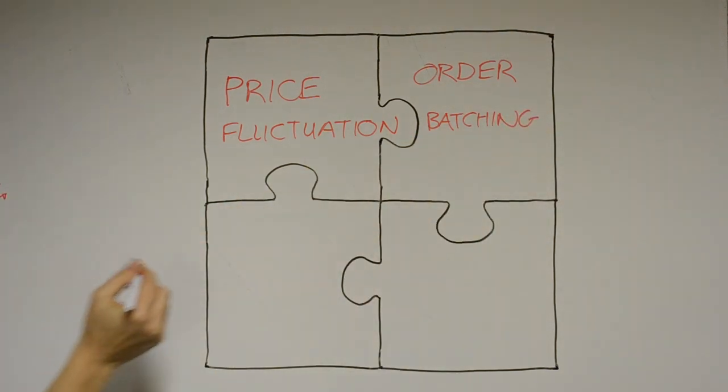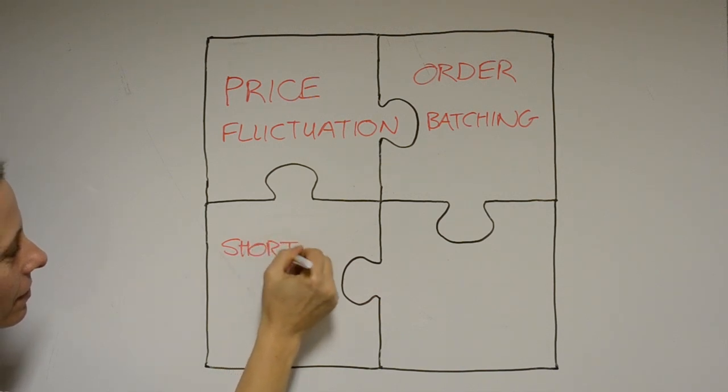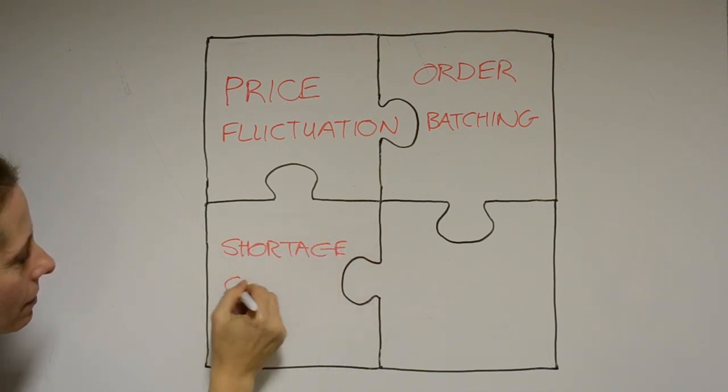Shortage gaming. If product demand exceeds supply, manufacturers ration products, while customers exaggerate their orders to counteract the rationing. Eventually, orders will disappear and cancellations will pour in, making it impossible for the manufacturer to determine the real demand for its product.